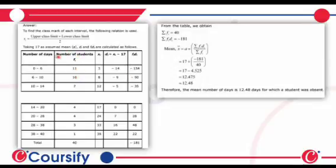From this table, we obtain summation of FI is 40 and summation of FI DI is minus 181.